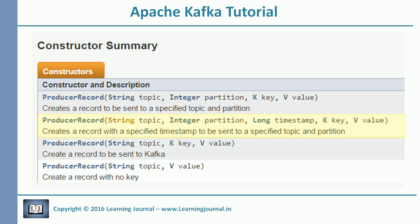Kafka comes with a default partitioner. This partitioner will use the message key to determine a partition number. So if you are sending a few thousand messages with the same message key, they will all land in the same partition. If you don't send a message key, the default partitioner will evenly distribute those messages across the available partitions. If you set a partition number in your ProducerRecord, you disable the default partitioner — it is like hard-coding a partition in the message itself. So if you hard-code it to zero, your message will go to partition number zero.